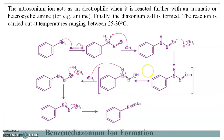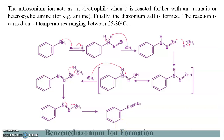The aromatic amine — here we have taken aniline — reacts with the formed nitrosonium ion and finally there is a formation of the benzene diazonium ion or diazonium salt. If there is a presence of chloride, then it forms a diazonium chloride salt.